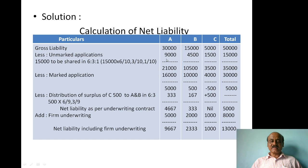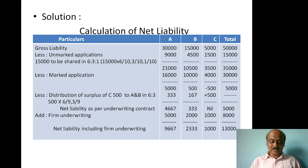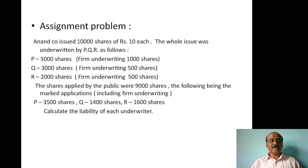So to summarize the calculation steps: first, gross liability from shares underwritten; then distribute unmarked applications; less market applications; less surplus distribution; and add firm underwriting — so you get the net liability including firm underwriting. This is an important 12-mark problem on firm underwriting, useful as an assignment problem model.